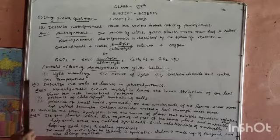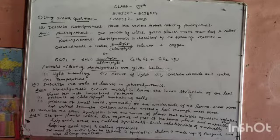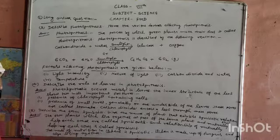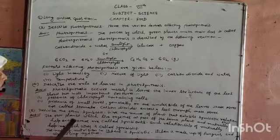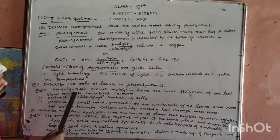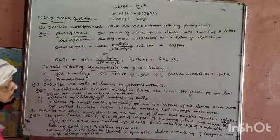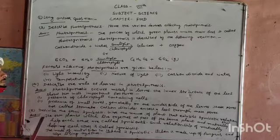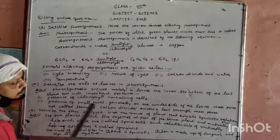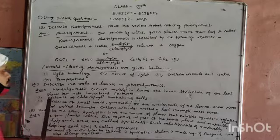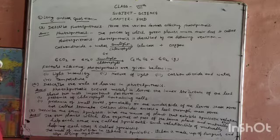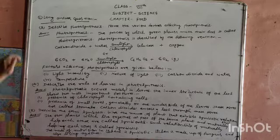Question 4: Describe the role of light in photosynthesis. Photosynthesis occurs in leaves. The inner structure of the leaf shows two most important features.